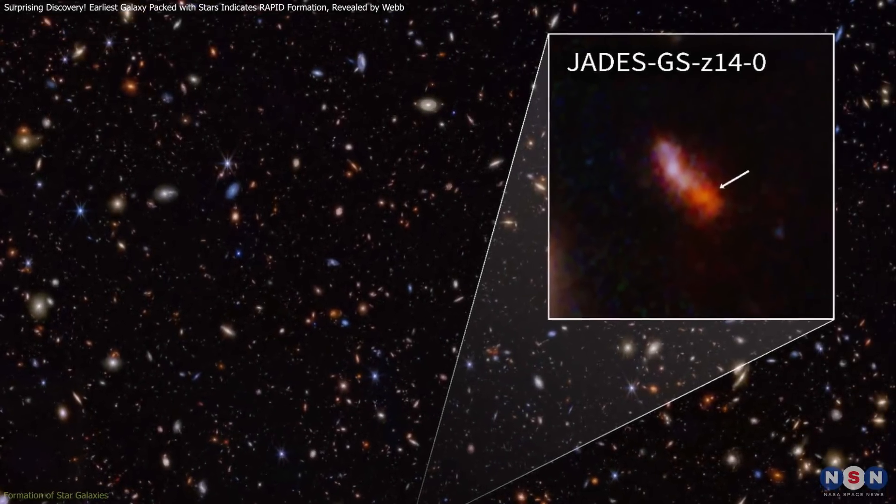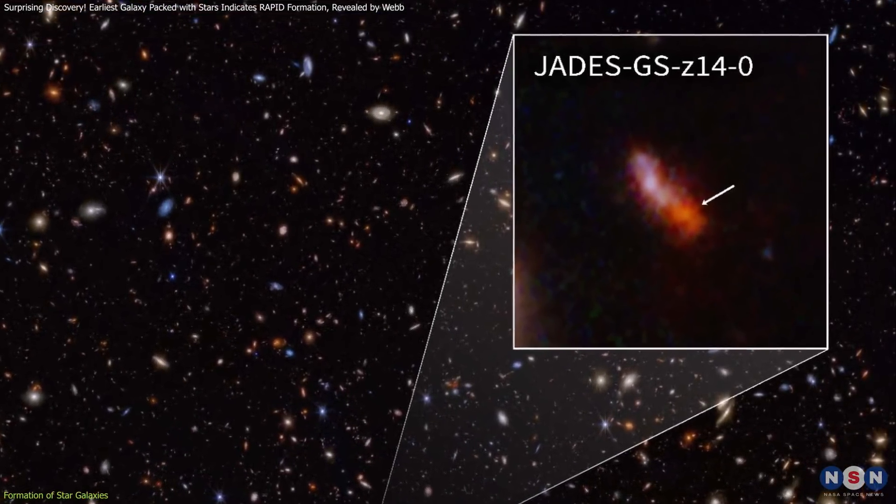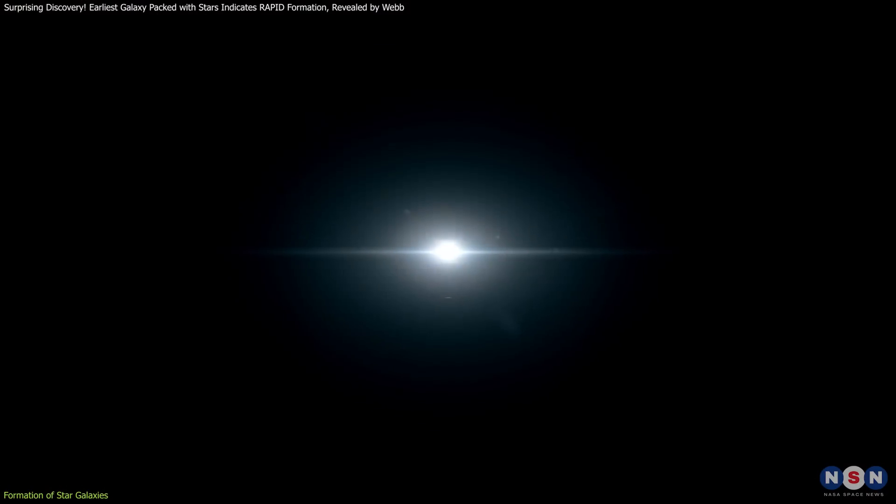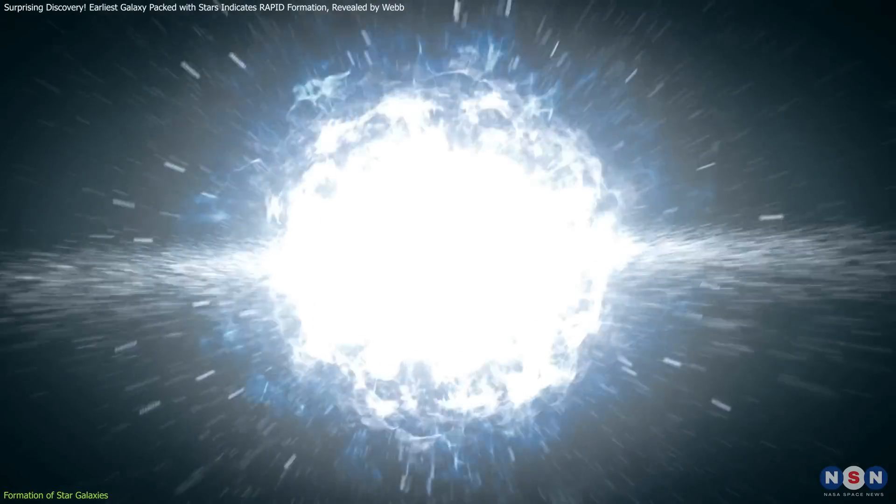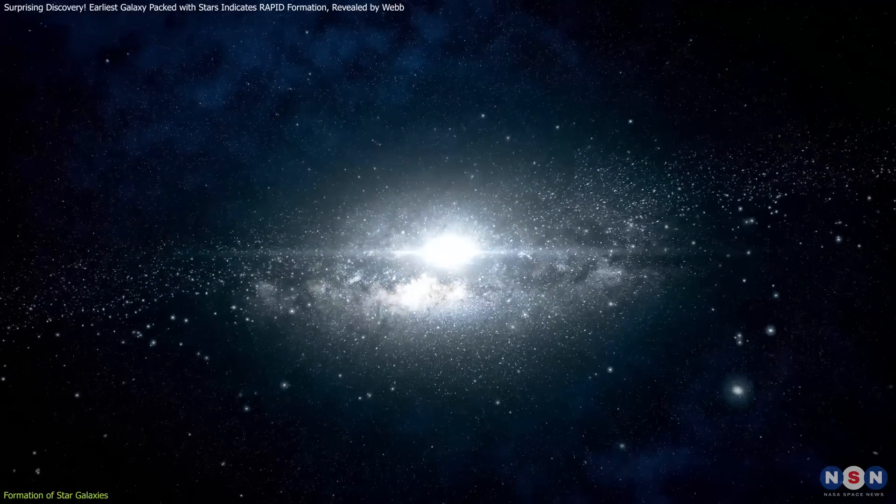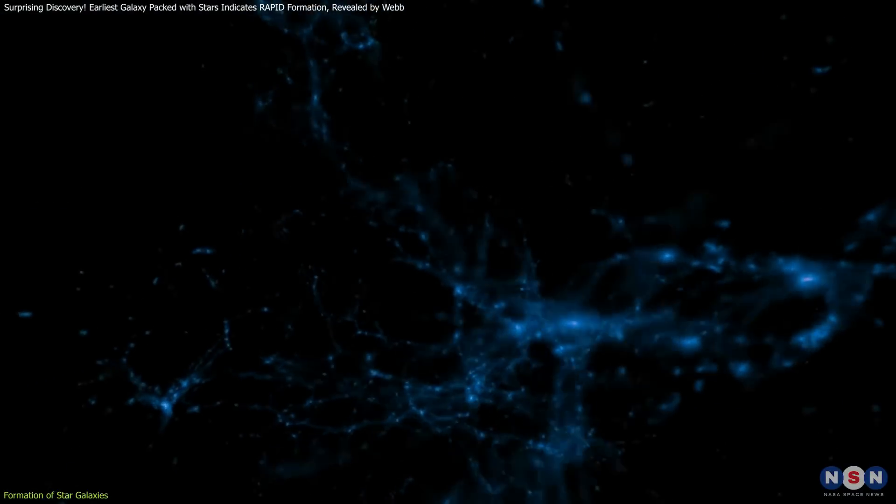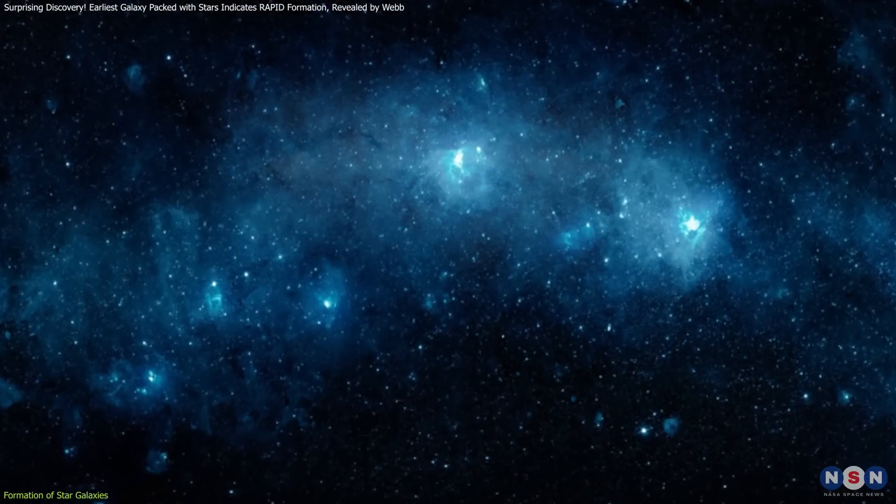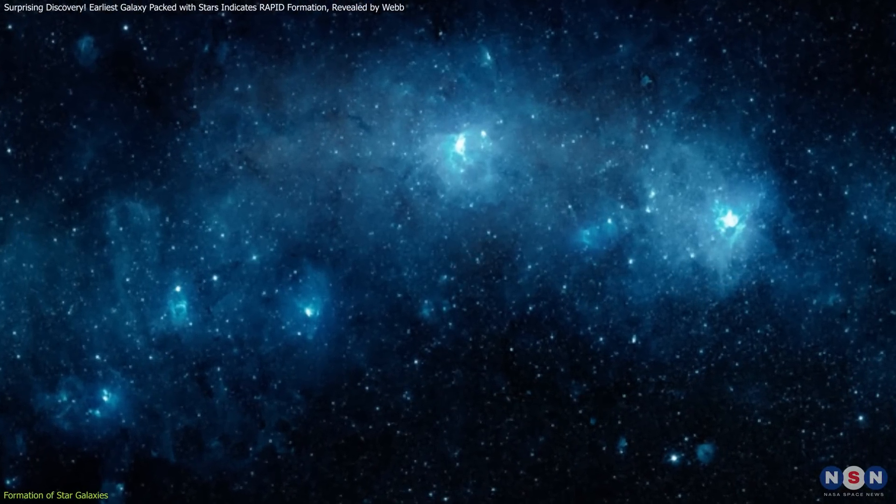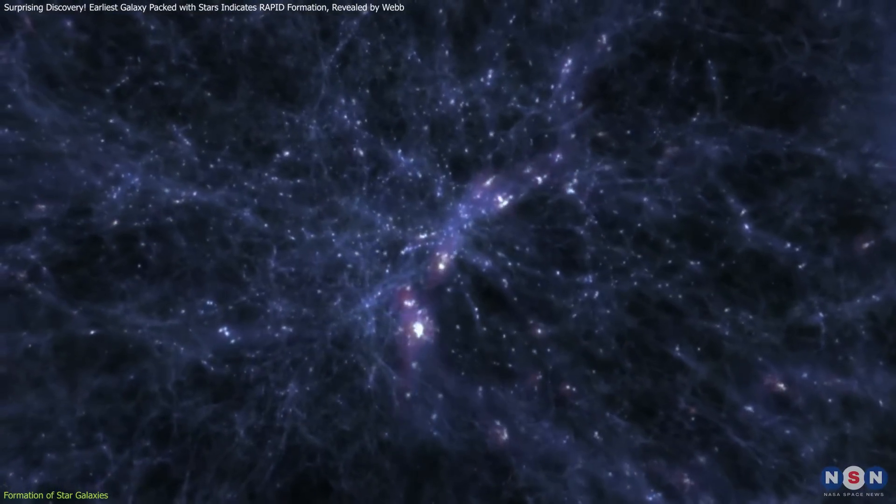So, how did a galaxy like JADES 14-0 form in the early universe without a black hole? After the Big Bang, the universe was filled with a hot, dense plasma of particles. As it expanded and cooled, these particles began to combine under gravity. The first stars, known as Population III stars, formed from primordial gas composed mostly of hydrogen and helium.